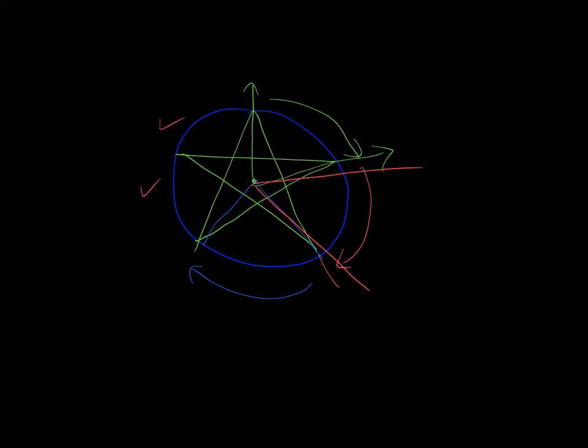So the number of degrees around a circle is 360 degrees. And if we count the angles here I have one, two, three, four, five. So each of these angles is 72 degrees. So that tells me something about the properties of this five-pointed star.